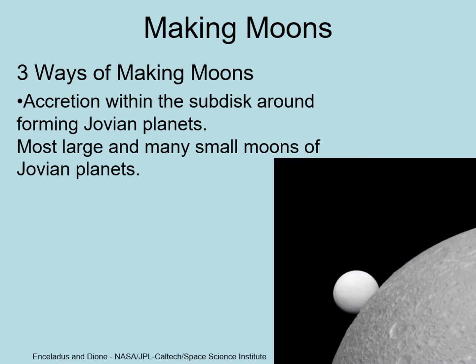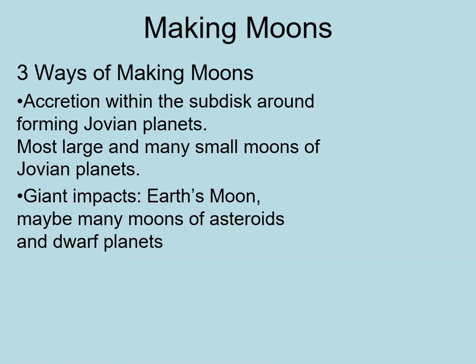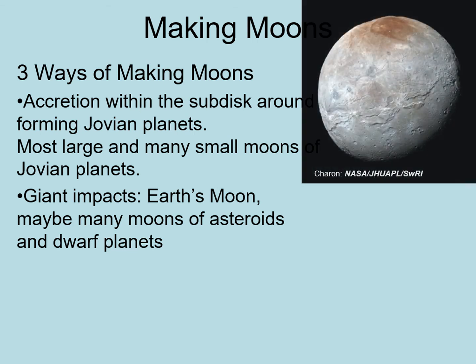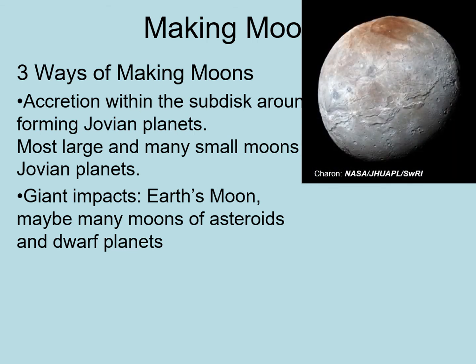These moons of Saturn probably formed this way. The next way to make a moon was through large collisions. The collision between a protoplanet and the Earth, which produced our Moon, is an example of this. Many planetary scientists think that many of the dwarf planets and asteroids that have moons may have gotten them this way — such as Pluto's moon, Charon.